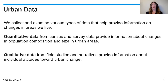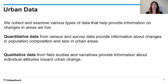Some of the data that we look at: we look at quantitative data that we get from the census and from surveys, which gives us information about changes in population size and changes in population composition. We also look at qualitative data, which we get from field studies and narratives, and these help provide information about people's attitudes towards urban change.